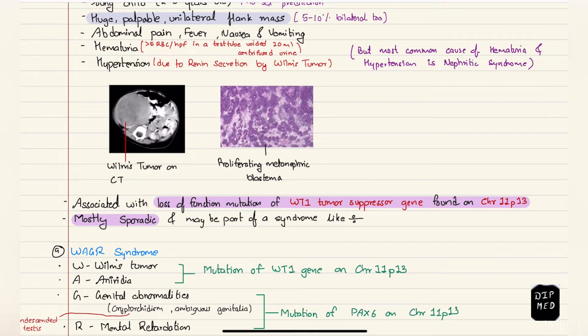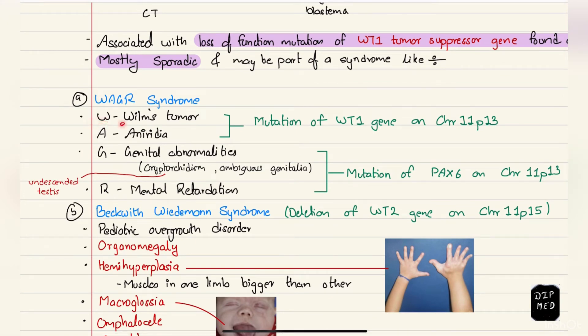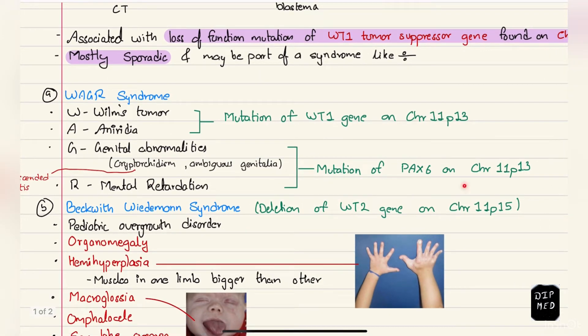Some cases are familial but most are sporadic and may be part of a syndrome like WAGR syndrome. W stands for Wilms tumor, A for aniridia, G for genital abnormalities such as cryptorchidism and ambiguous genitalia, and R stands for mental retardation. However, nowadays we use restriction instead. Wilms tumor and aniridia are due to mutation of WT1 gene on chromosome 11p13. Genital abnormalities and mental retardation are due to mutation of Pax6 on the same chromosome.